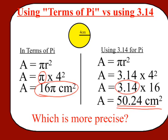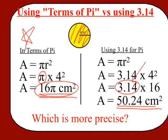So which of these answers — 50.24 centimeters squared or 16 pi centimeters squared — do you think is more precise, a more accurate reflection of the area of this circle? The answer is in terms of pi, because over here we rounded pi to 3.14. So the answer that's more precise or more accurate is actually 16 pi centimeters squared.